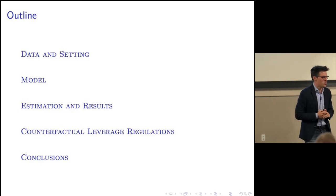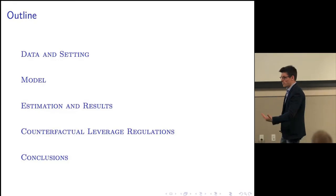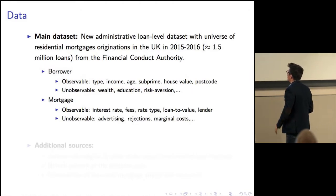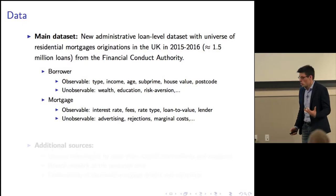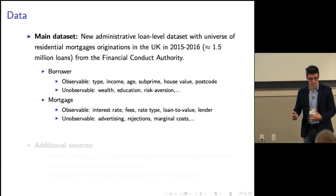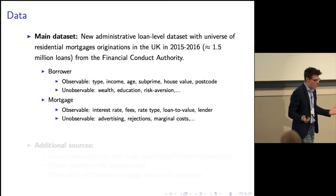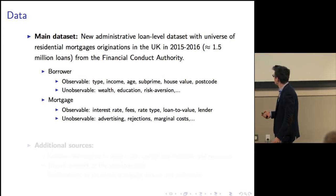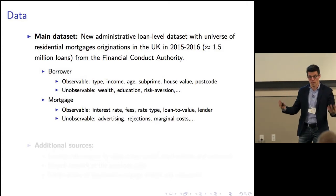Let me briefly describe the UK setting and the data, which will guide my empirical model. It's an administrative dataset for the UK in 2015–16. I have a lot of information on the borrower: the borrower type — first-time buyer, home mover, or remortgager — the income, the age, whether they are prime or subprime, the value of the house, and the postcode. However, it's not Swedish data, so I don't know their wealth, sophistication, or education level, and in the model I'm going to allow for unobservable borrower heterogeneity.